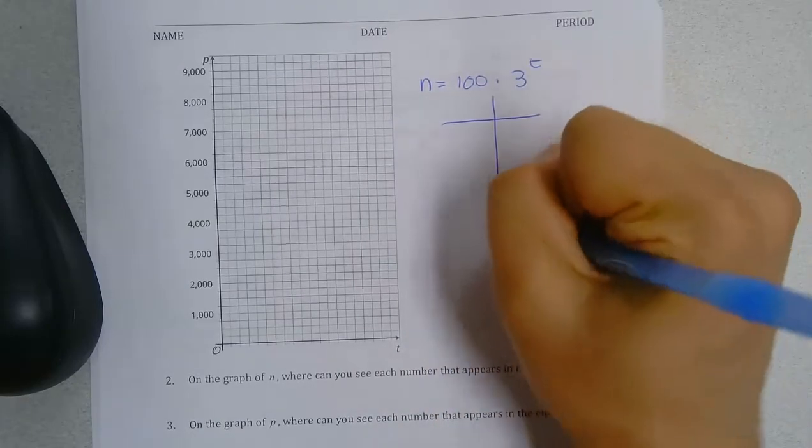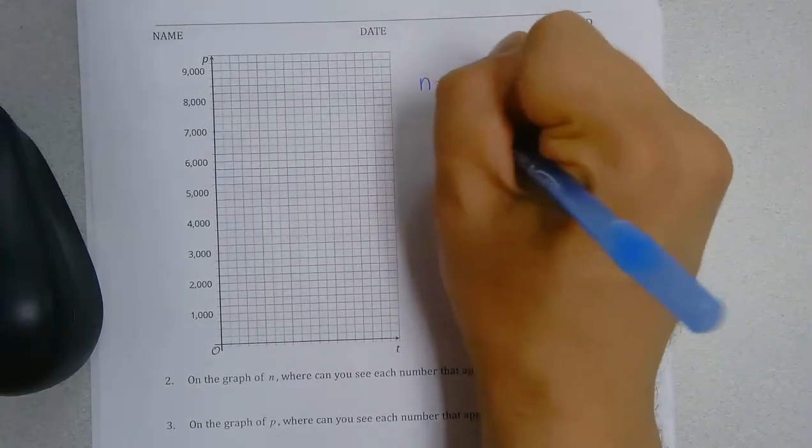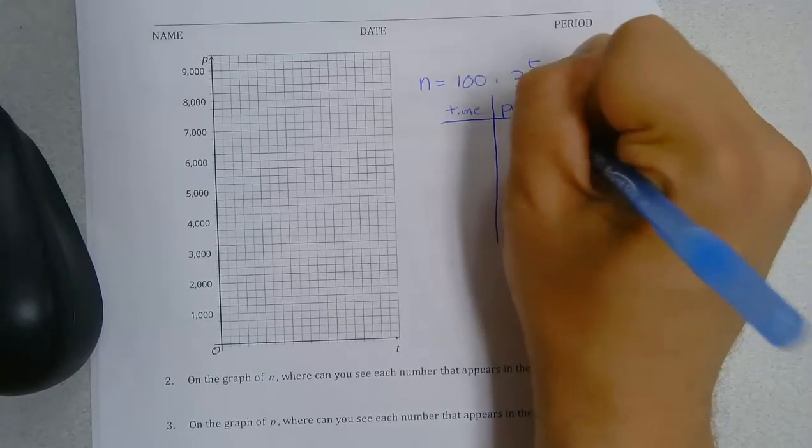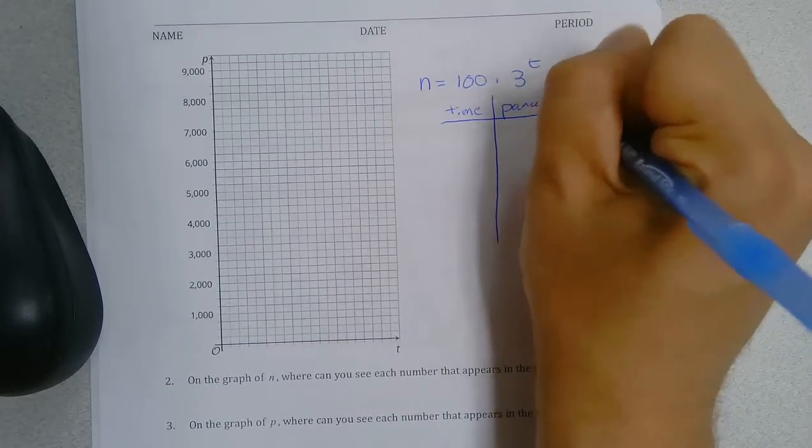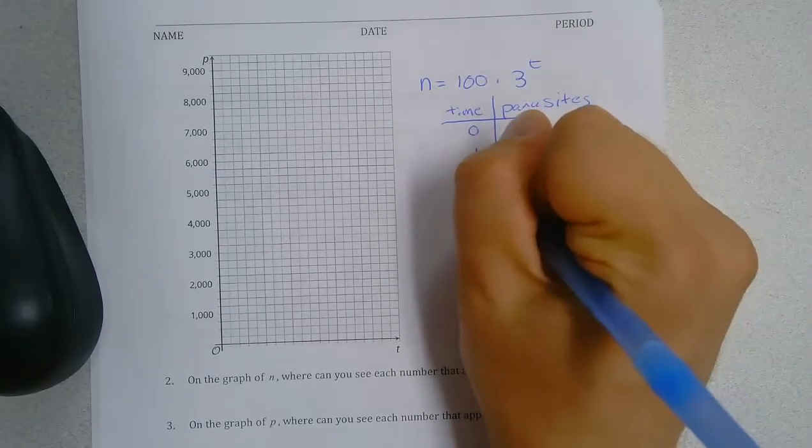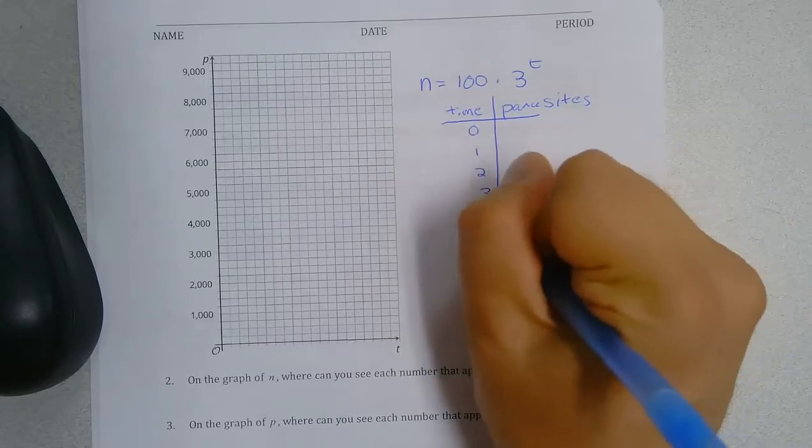So in making a table, again, this is our time. This, again, measured parasites. So our time was 0, 1 hour, 2, 3, and 4.